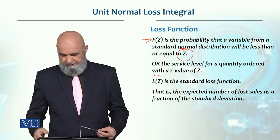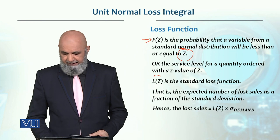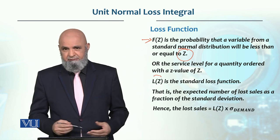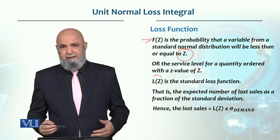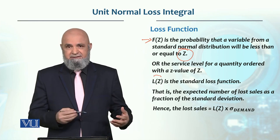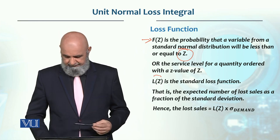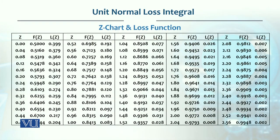Lost sales can be calculated as L(Z) multiplied by the standard deviation of demand. On a demand basis, we can calculate lost sales using this formula. In this chart, we have all three values: Z, the area under the curve and cumulative probability F(Z), and L(Z) which is the loss function.